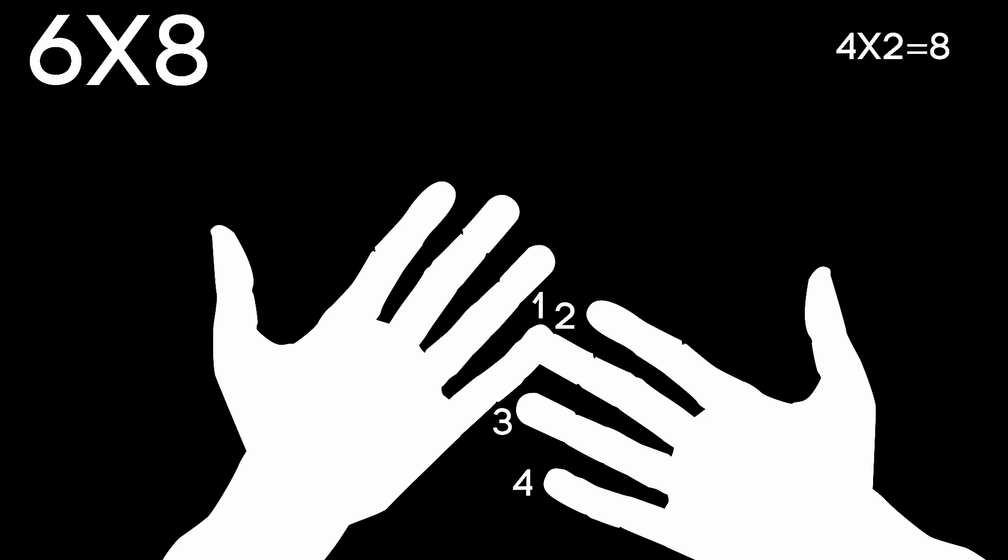So 1, 2, 3, 4. Four fingers. 4 times 10 is 40. Now let's add our numbers together. 40 plus 8 is 48.